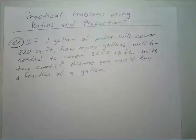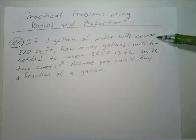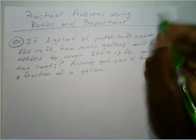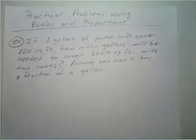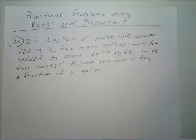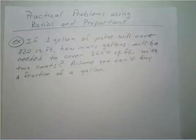For this first example: if you have one gallon of paint, it will cover 820 square feet, how many gallons will be needed to cover 2,650 square feet with two coats? We're going to assume that you can't buy a fraction of a gallon, so we're going to round up to the nearest gallon.